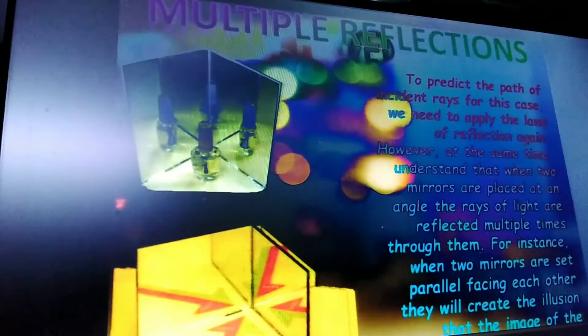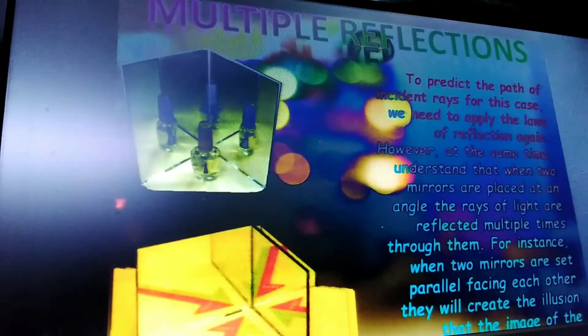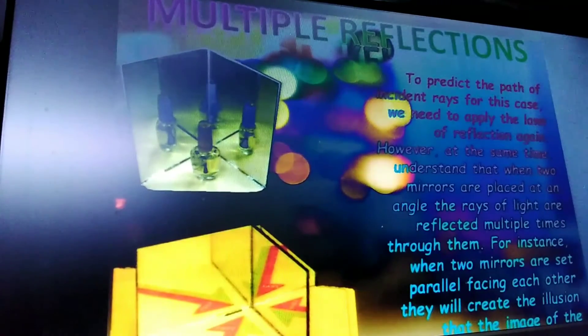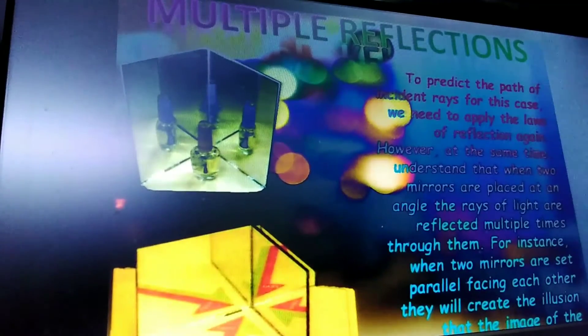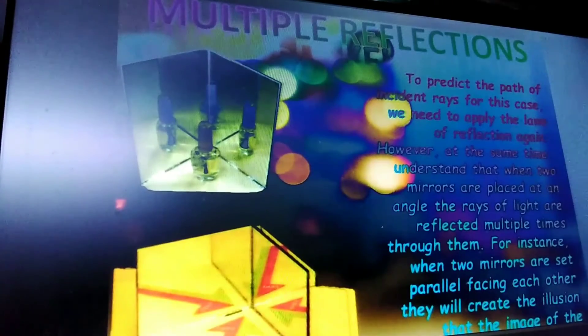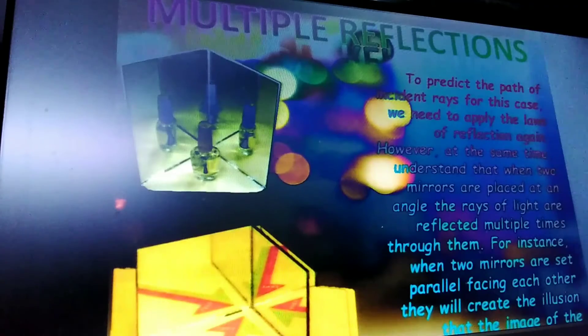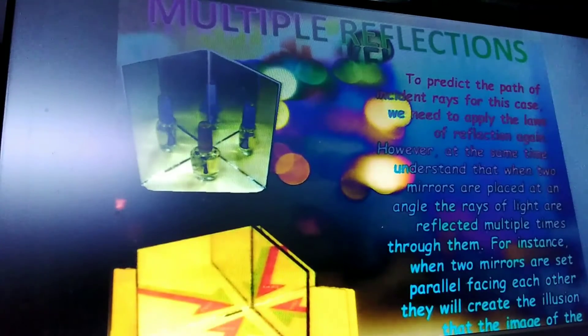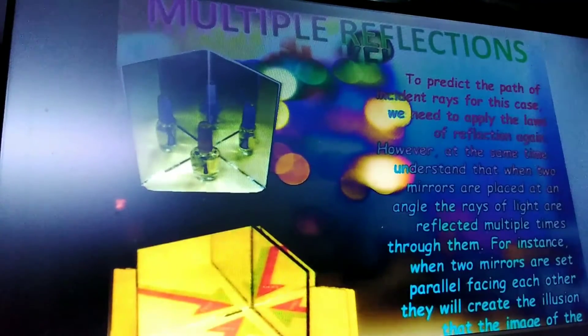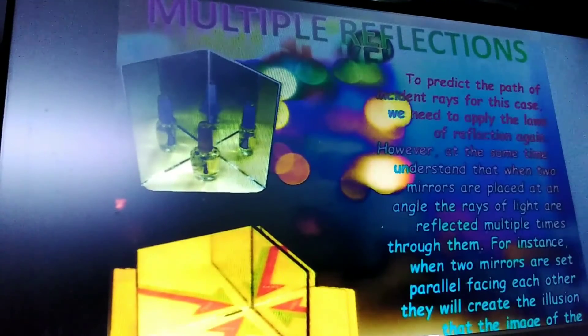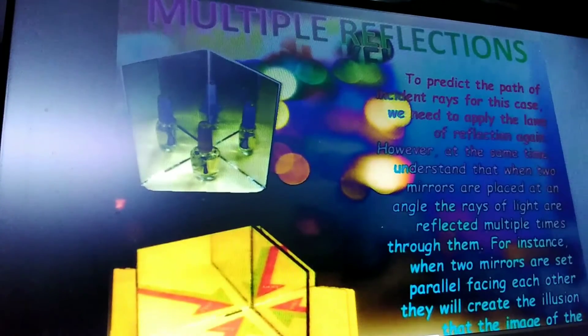To predict the path of incident rays, we apply the laws of reflection. When two mirrors are placed at an angle, light rays are reflected multiple times through them. For instance, when two mirrors are set parallel facing each other, they create the illusion of many images of the object.